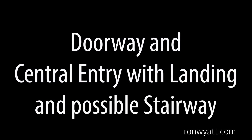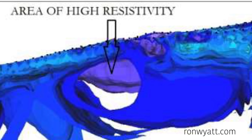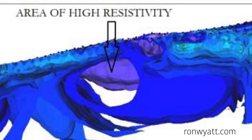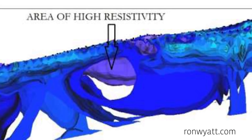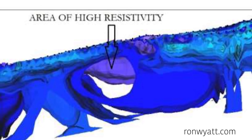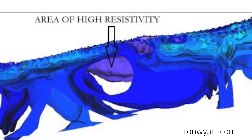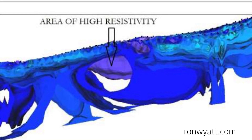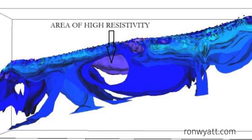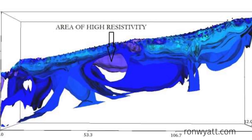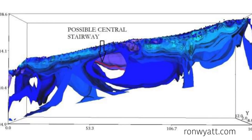Along the exact center line of the ship, the scans identified an area of much higher resistivity, which is possibly an open cavity. The bottom edge of this cavity is inclined on a 35-degree angle relative to the decks of the ship and slopes downward like a central stairway, where it connects the upper, middle, and bottom decks.